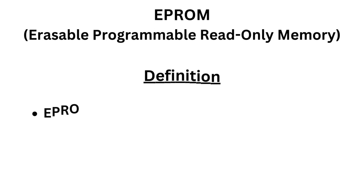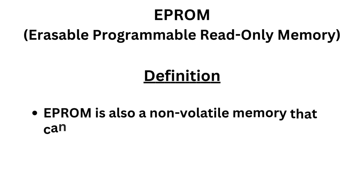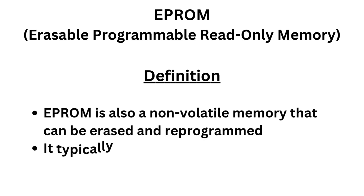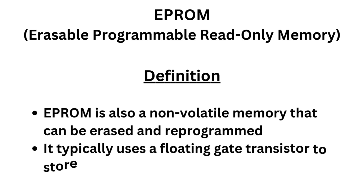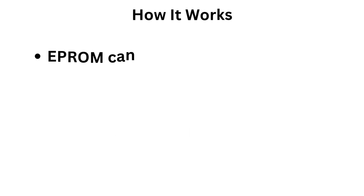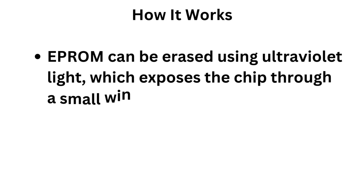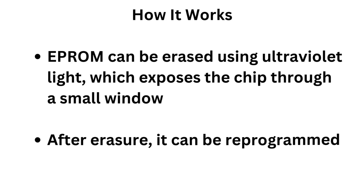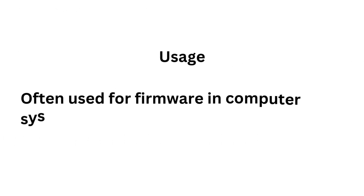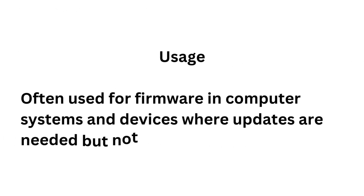EPROM, or Erasable Programmable Read-Only Memory: EPROM is a non-volatile memory that can be erased and reprogrammed. It typically uses a floating-gate transistor to store data. EPROM can be erased using ultraviolet light, which exposes the chip through a small window. After erasure, it can be reprogrammed. It is often used for firmware in computer systems and devices where updates are needed but not frequently.